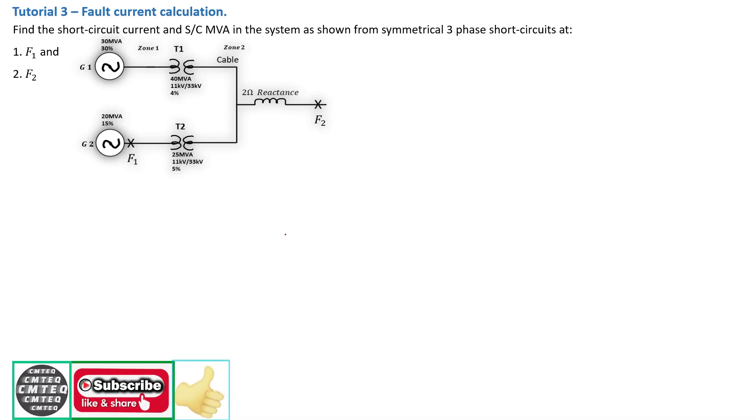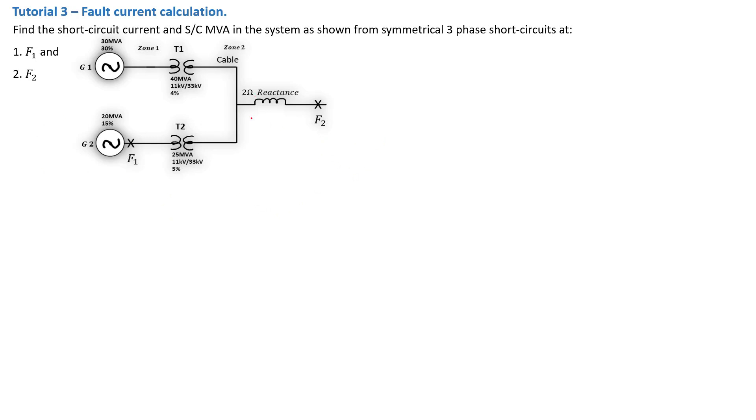Now we have done a number of tutorials on per unit system. We are following up with a new series on fault current calculation, which is basically a continuation of the per unit system, because you cannot do fault current calculation without doing your per unit. You need to reduce your electrical network into a per unit equivalent circuit, and from there you can do your fault finding. So if you haven't yet subscribed to SimTech channel, please do it now. There is so much more to gain as you go through your electrical engineering learning program.